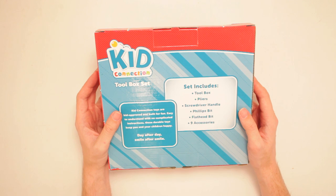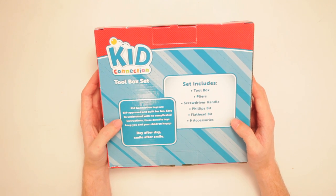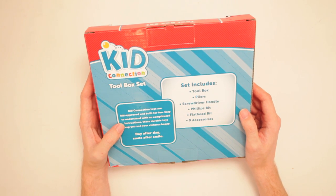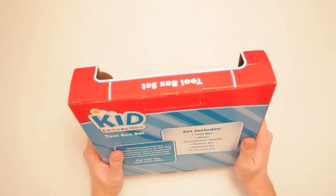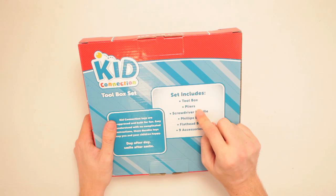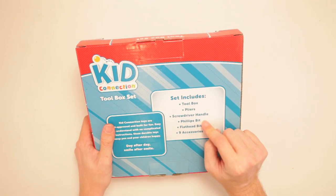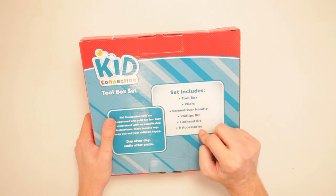Right on the back it says Kid Connection Toys are kid approved and built for fun. Easy to understand with no complicated instructions. These durable toys keep you and your children happy day after day, smile after smile. And it includes a toolbox, pliers, screwdriver handle, Phillips bit, flat head bit, nine accessories.